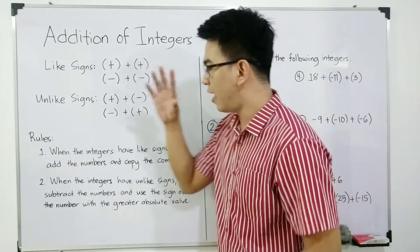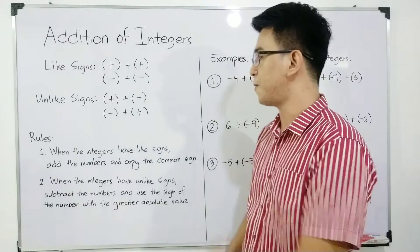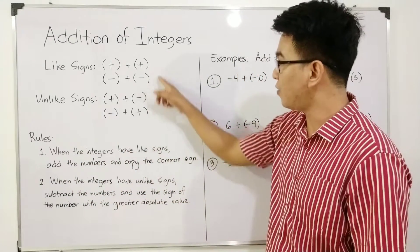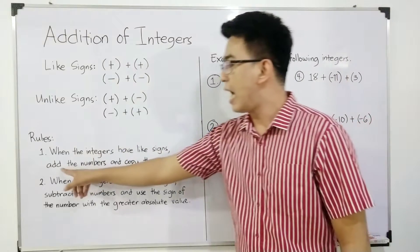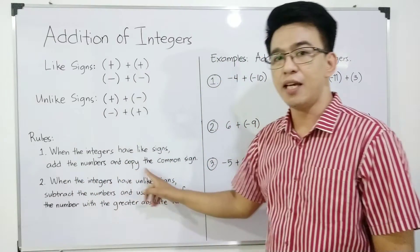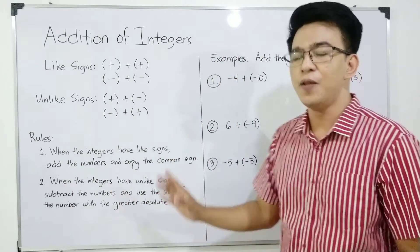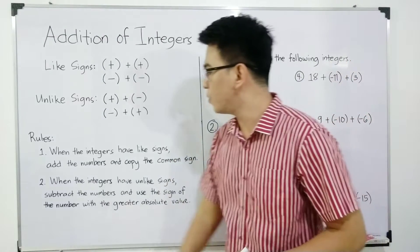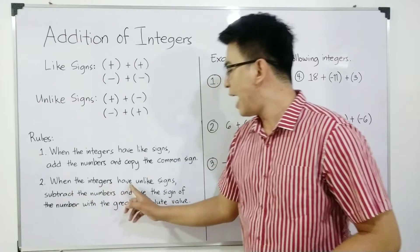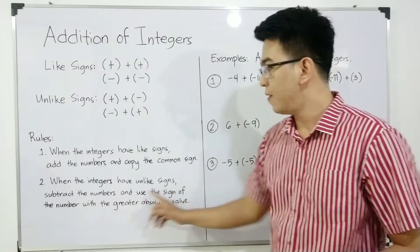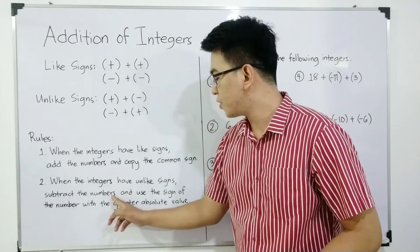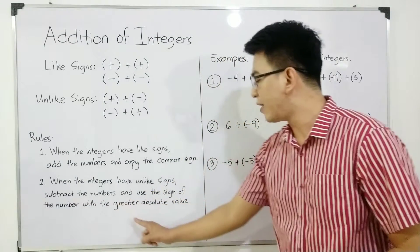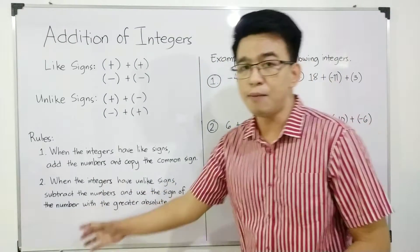Now, let's go again with the first rule. Rule number one: when the integers have like signs, add the numbers and copy the common signs. Later on, we will elaborate that in our examples. Next, number two: when the integers have unlike signs, subtract the numbers and use the sign of the number with the greater absolute value.